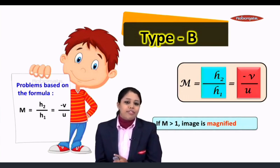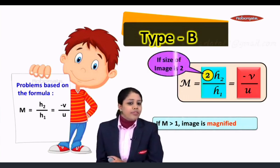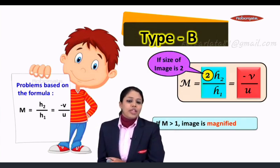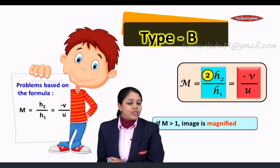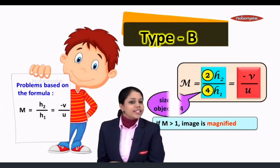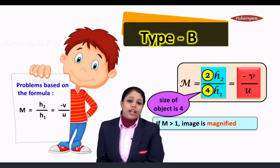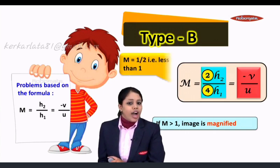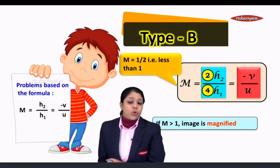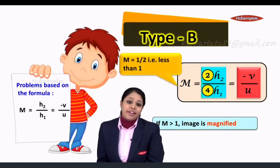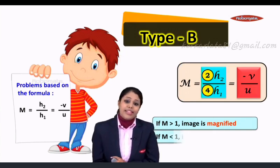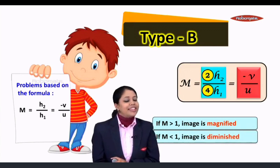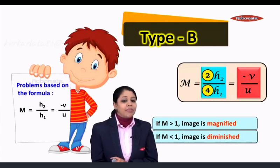Let us consider other values. If the size of the image is 2 and size of the object is 4, now 2 divided by 4 will give me half. So M is equal to half, that is less than 1. So if M is less than 1, then we say that the image is diminished.